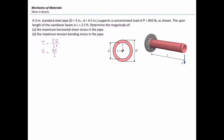First I need to determine the maximum shear force and moment in this problem. To do that I will draw the shear and moment diagram. This is the side view of the beam — it is fixed at the left end and subjected to a force at the very right end. The shear diagram is constant, giving a shear force of P everywhere. The moment diagram is a linear line which is negative PL at the very left end and goes to zero at the right end.